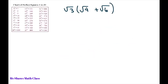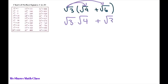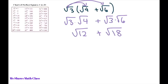The next example uses the distributive property. When you distribute square root of 3 across the parentheses, you multiply it by each term. So you get square root of 3 times square root of 4, plus square root of 3 times square root of 6, which gives square root of 12 plus square root of 18.